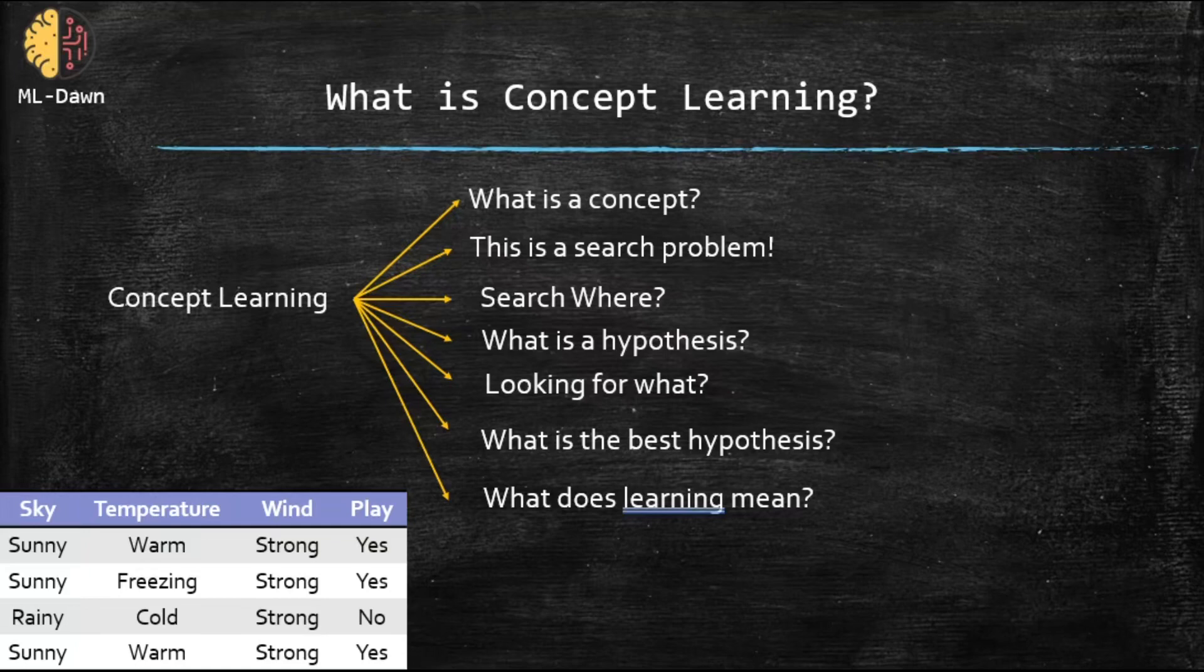Question number two. Basically, in this case, issue number two. Concept learning is actually a search problem. Now, when it comes to searching, searching where? Now, this answer might look a little bit fancy, but it's actually quite simple. The search happens in the space of hypotheses. Now, the question is, what is a hypothesis?